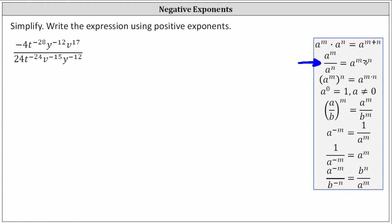Looking at the given expression, we begin by simplifying negative 4 divided by 24. 4 and 24 share a common factor of 4 — there is one 4 in 4 and six 4s in 24. Simplifying, we have negative 1 sixth.